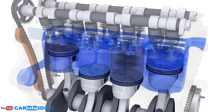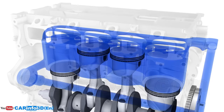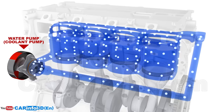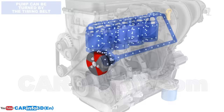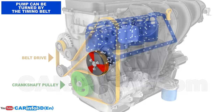The coolant doesn't stay in the same place. Instead, a water pump keeps it circulating in a closed loop. In turn, the pump is normally rotated by a belt drive that is powered by the crankshaft. This type of pump is known as a centrifugal pump.